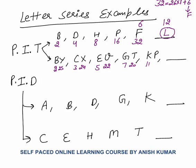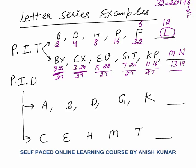The pattern here is that each pair of letters, when their values are added, sums to 27. For example, 2 plus 25 equals 27. The next number should also make a pair summing to 27. So 13 plus 14 equals 27, and 14 means N. So our answer would be MN.